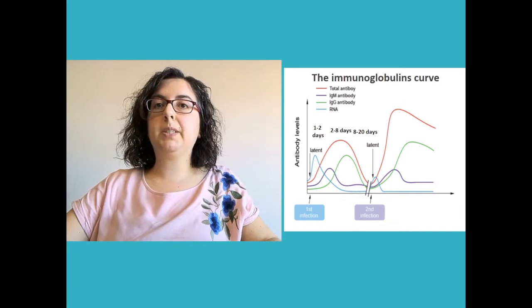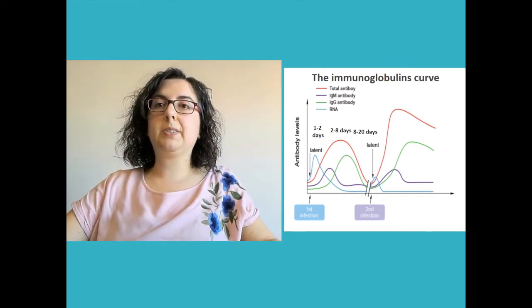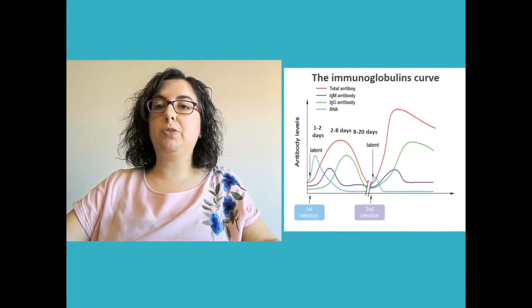IgM in the blood means that there is an infection ongoing. The B lymphocyte starts also to produce immunoglobulin G, or IgG.